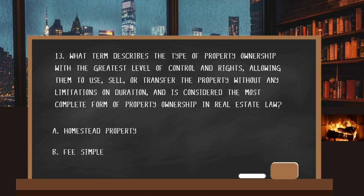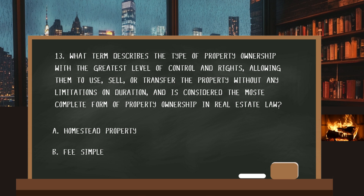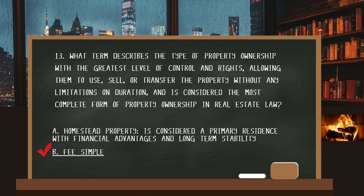Number thirteen. What term describes the type of property ownership with the greatest level of control and rights, allowing the owner to use, sell, or transfer the property without any limitations on duration — considered the most complete form of property ownership in real estate law? The answer is B: fee simple. Homestead properties are considered a primary residence with financial advantages and long-term stability.